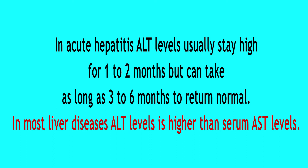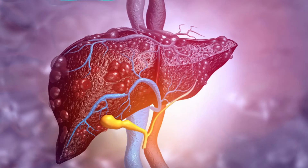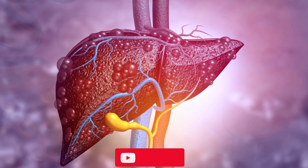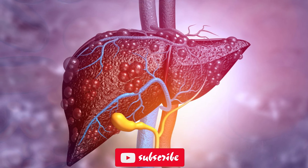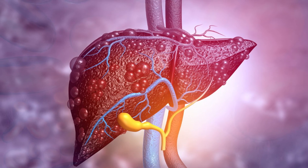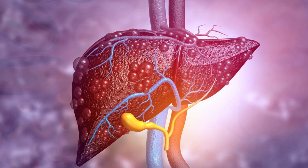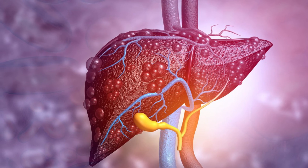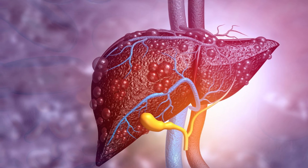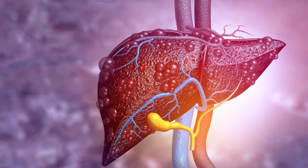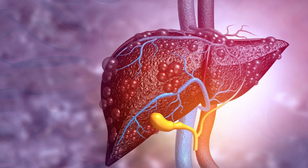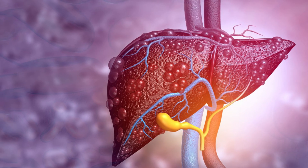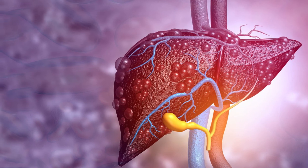In most liver diseases, ALT levels are higher than serum AST levels. It is important to clarify that ALT levels do not reflect the function of the liver — even in conditions when ALT is very elevated, the liver may still function properly. Consequently, if you have elevated liver enzymes or an abnormal liver test, you need to ask your physician exactly what all of the tests indicate.